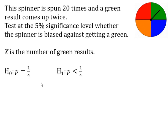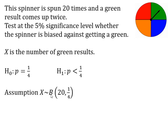The next thing we have to do is assume that the null hypothesis is true and write down the distribution of our random variable. So we assume that x follows a binomial distribution — each spin can either be green or not green, it's spun 20 times, and the probability of getting a green is a quarter, assuming the null hypothesis is true.